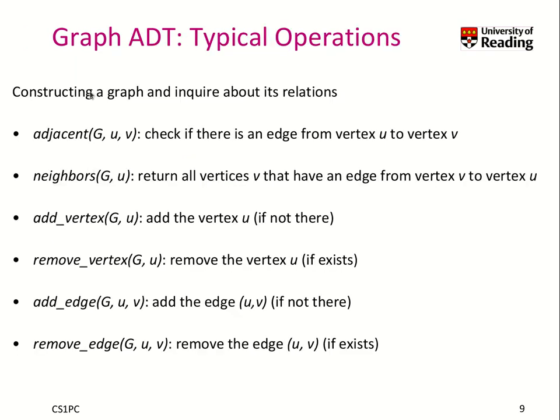In a graph abstract data type, typical operations are for constructing a graph or to inquire about the relations in a graph. For instance, you may want to add a vertex, remove a vertex, add an edge, or remove an edge. That's about the construction of a graph.